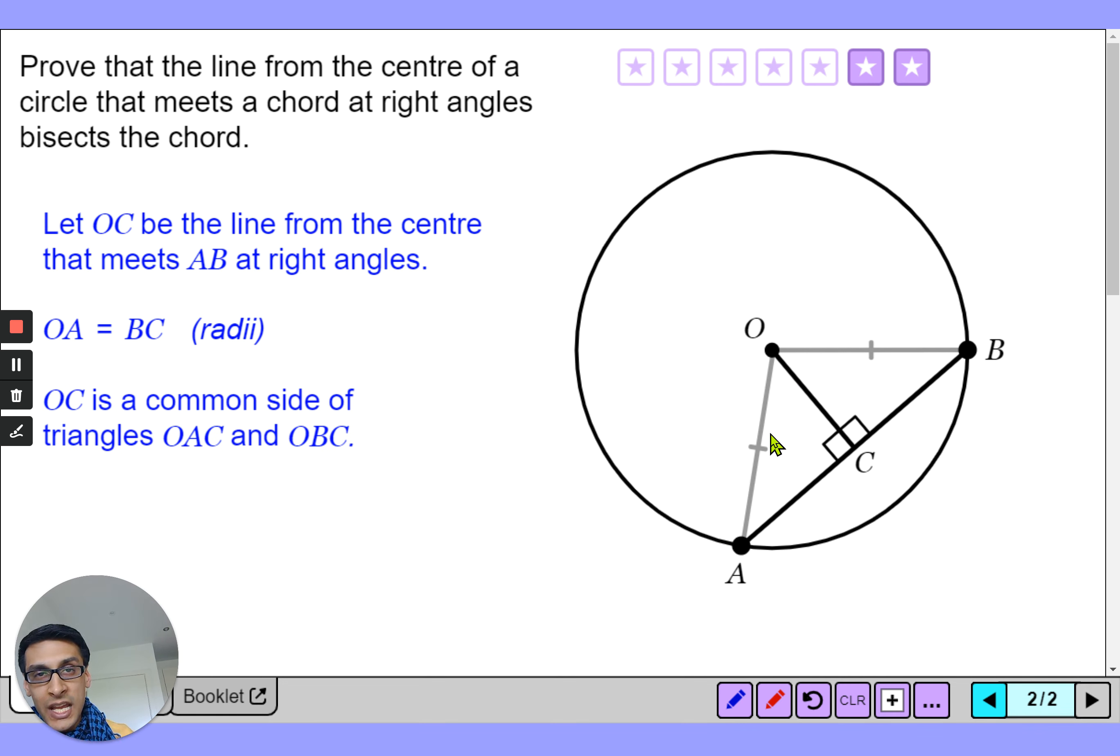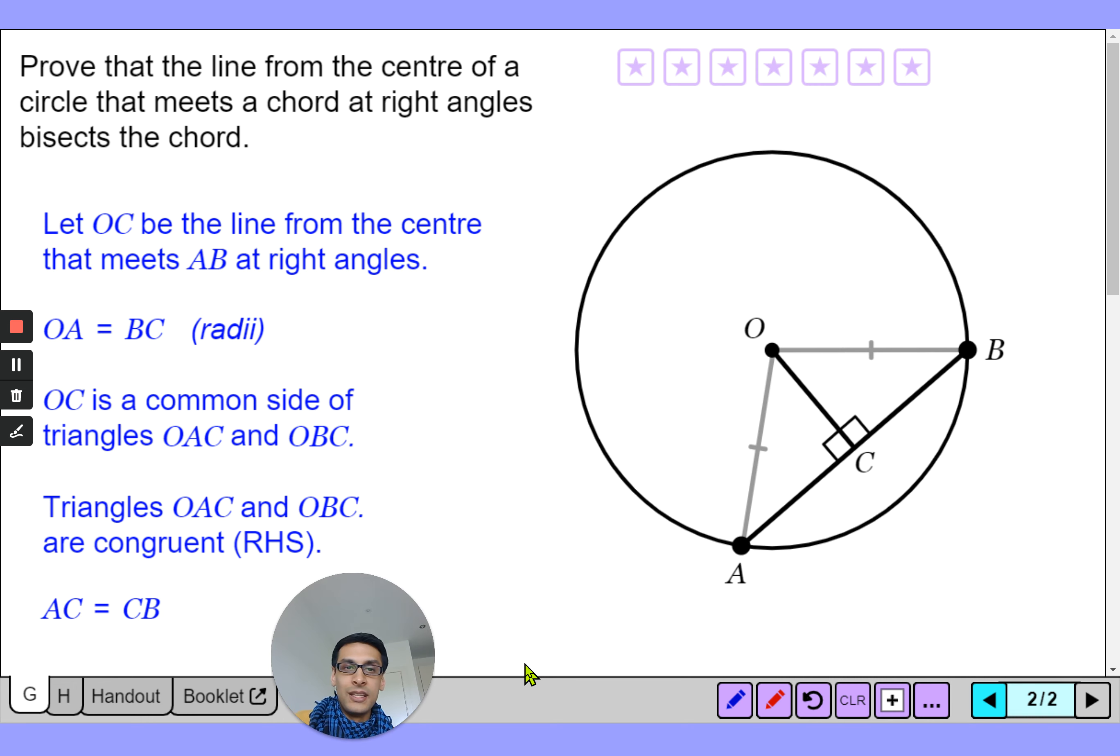Now OC is a shared side for this triangle and we also know that we have a right angle, and essentially you end up with congruent triangles. So we can say just like from the previous topic you have a right angle triangle with a hypotenuse in common and another length in common which in this case is OC. And therefore they are congruent and that's your proof enough for you to work it out. So AC is equal to CB.